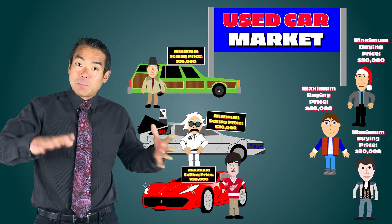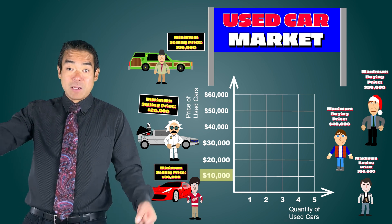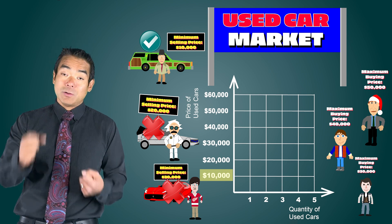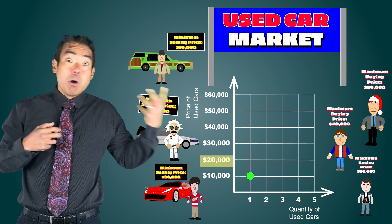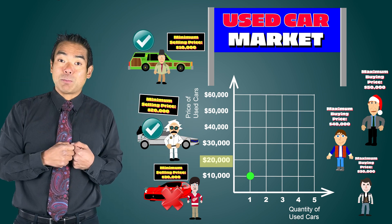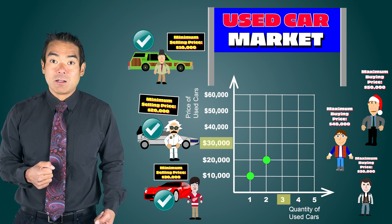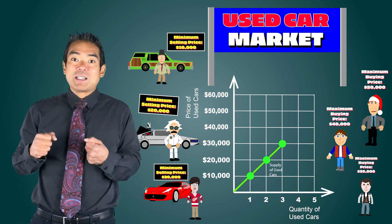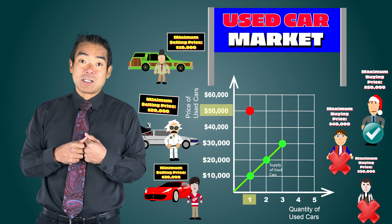We can use this data to plot market supply and market demand on a diagram. If the price in the market for cars is $10,000, then only Jerry is going to be willing to sell his car, and only one car will be supplied. At a market price of $20,000, both Jerry and Doc become willing to sell, so quantity supplied is two. And if the price is $30,000, then all three sellers will sell their car. On the demand side, if the price is $50,000, only Clark is going to buy a car, so quantity demanded is only one.